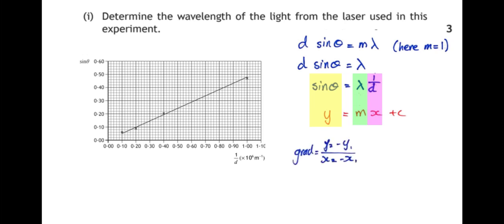So gradient: y2 minus y1 over x2 minus x1. Pick two points on the line that go through the corner of a box ideally. I'll go with these two. And set these numbers into my formula, and I get this value: 4.67 times 10 to the power of minus 7 meters, or 467 nanometers.